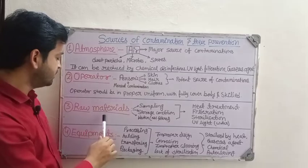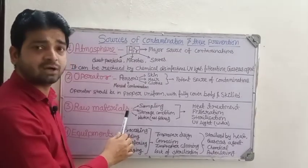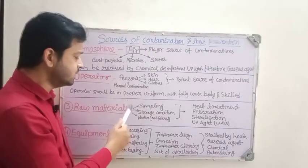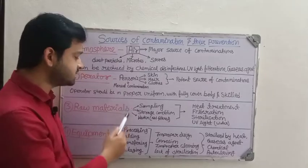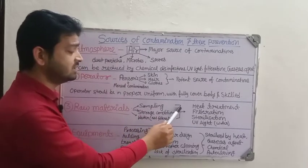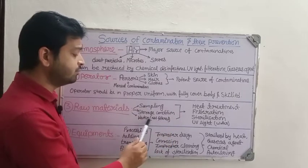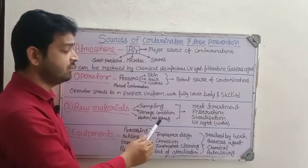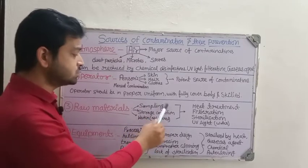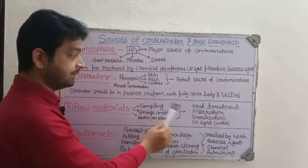The third source is raw materials, which may be any type — plant materials, powders, solids, semi-solids, or any other form. During the processing of these raw materials, improper sampling, improper storage conditions, or use of unfiltered water may be sources of contamination.